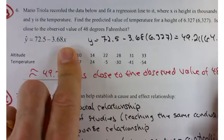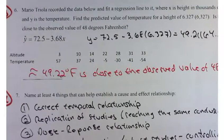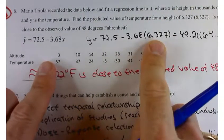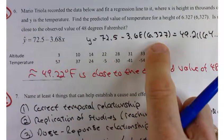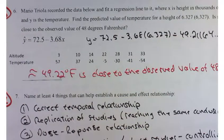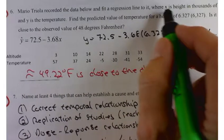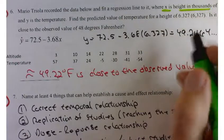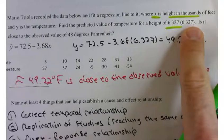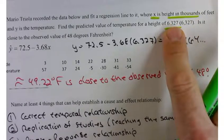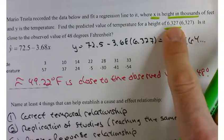Problem six here, I don't think many people had much problem with. It was just a matter of substituting in the 6.327 into your equation. One thing that you do have to be attentive to, is that X is height in thousands of feet. And they gave you the X value. This is 6,327 feet. That's how high it is, but as far as counting in thousands, there's your X value.